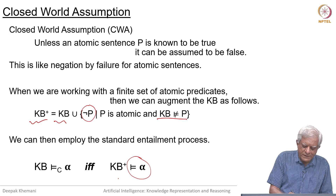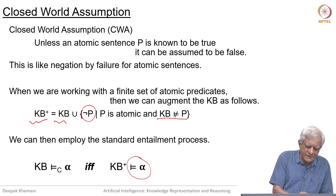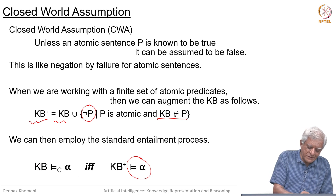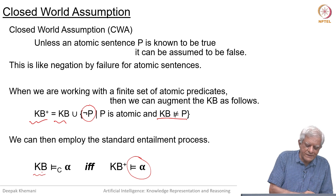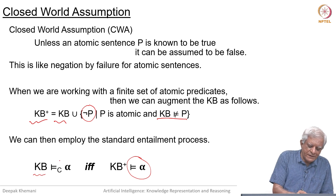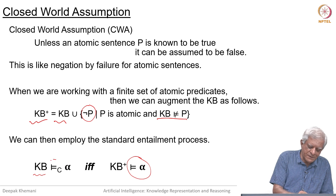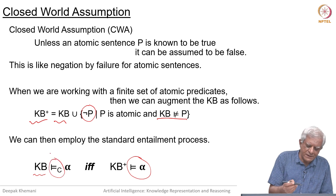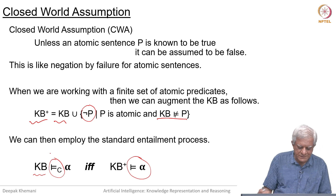If we can do that, then we say that the original, non-augmented knowledge base can infer alpha — but with a new form of entailment, which is entailment under the closed world assumption.